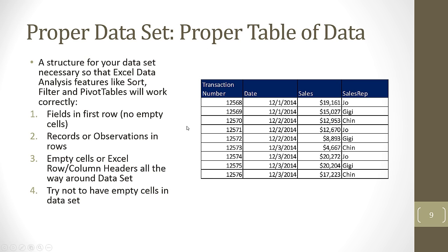Empty cells or Excel column row headers have to be all the way around our data set. That's particular to Excel. In other systems we don't have to worry because tables are kept completely separate. But in Excel, we have to make sure we either have the Excel row headers like one, two, three, four, or ABC and empty cells all the way around, or our data analysis features like pivot table sorting filter won't work. And try not to have empty cells in the data set. Again, if we have an empty cell for a date or a number, when we go to use a pivot table we get into some potential trouble. In the working world you can't always avoid empty cells in the data set.